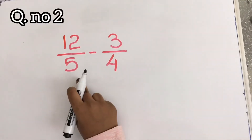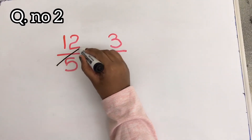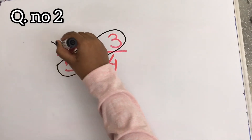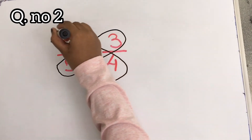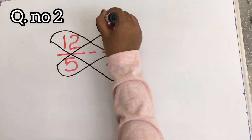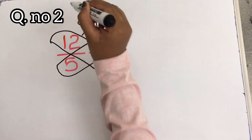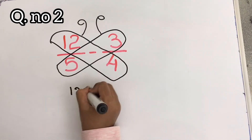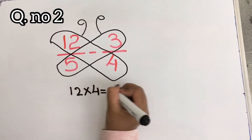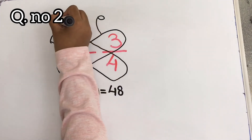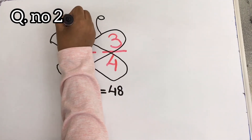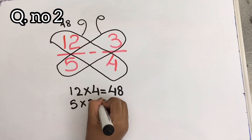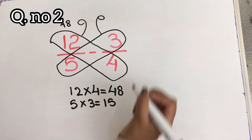Now let's draw the butterfly for the next example. First I am going to multiply 12 into 4. 12 into 4 equals to 48. I am going to write it here. And 5 into 3 — 5 into 3 equals to 15. I am going to write it here.